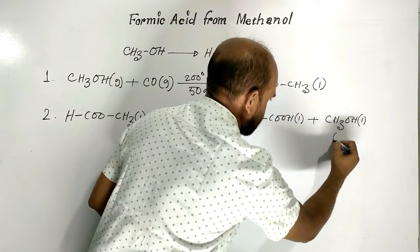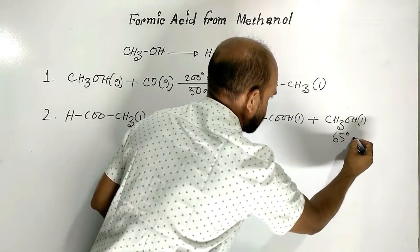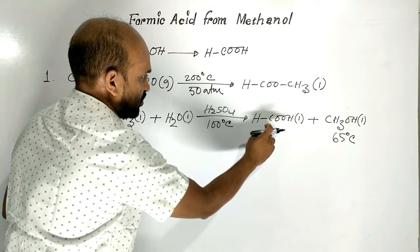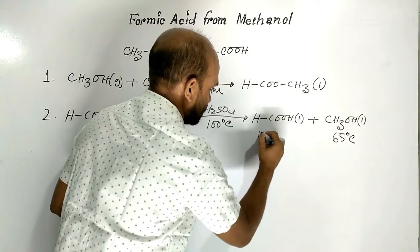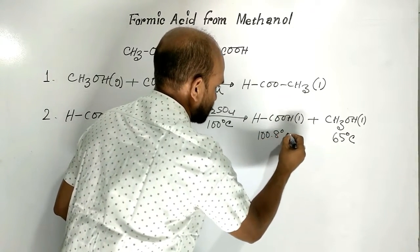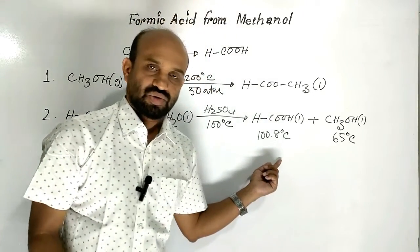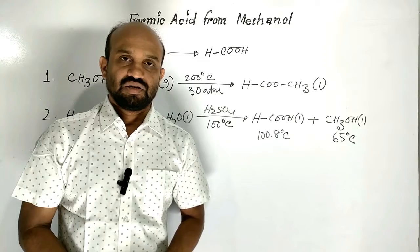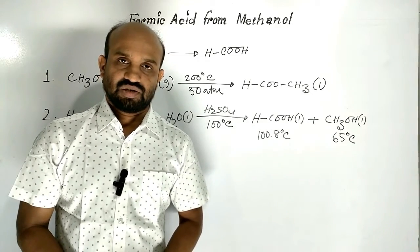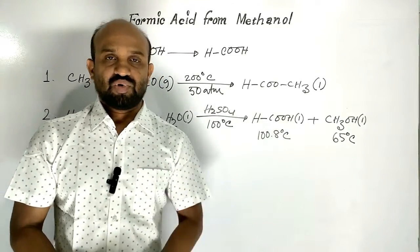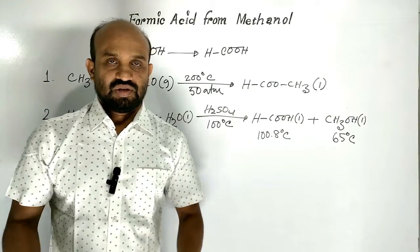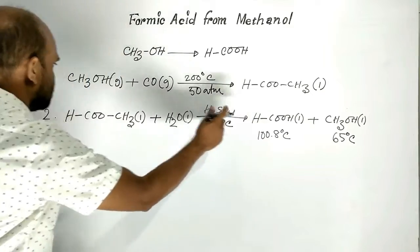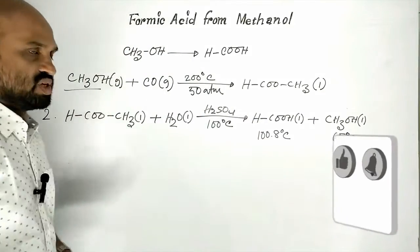The boiling point of methanol is 65 degrees Celsius and the boiling point of formic acid is 100.8 degrees Celsius. So formic acid can be separated easily by fractional distillation because of their boiling point difference. In this way we can prepare formic acid from methanol.